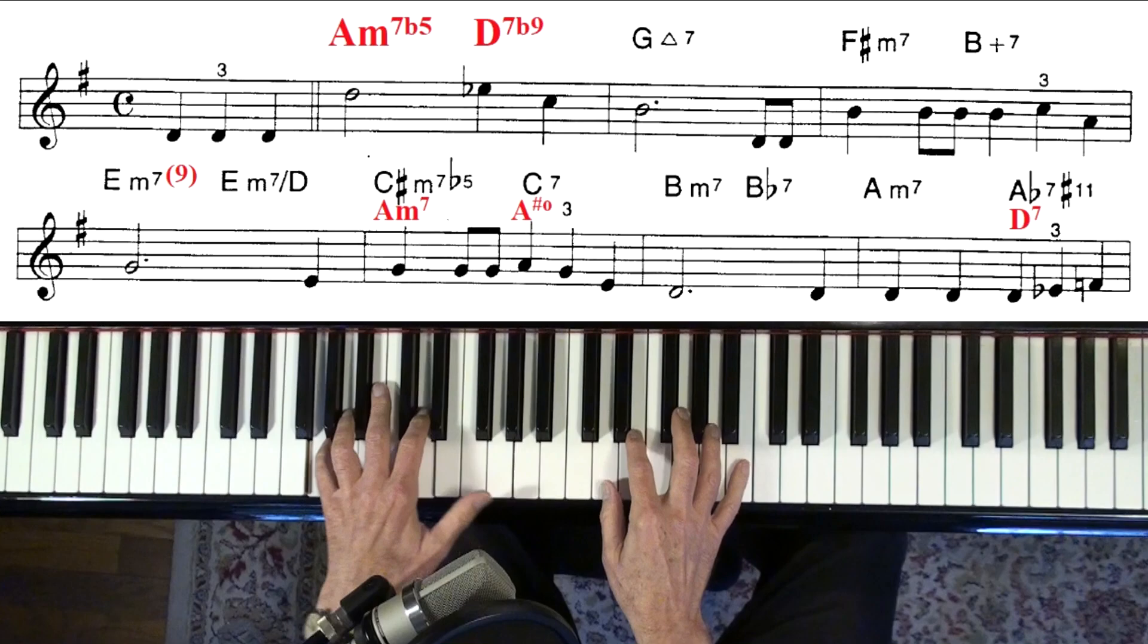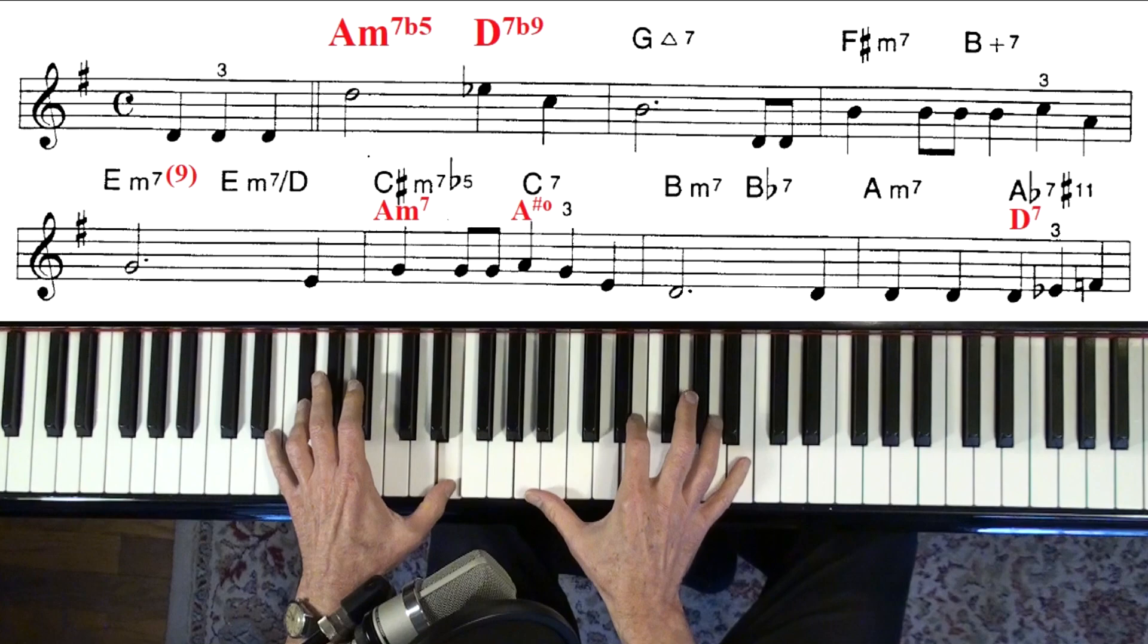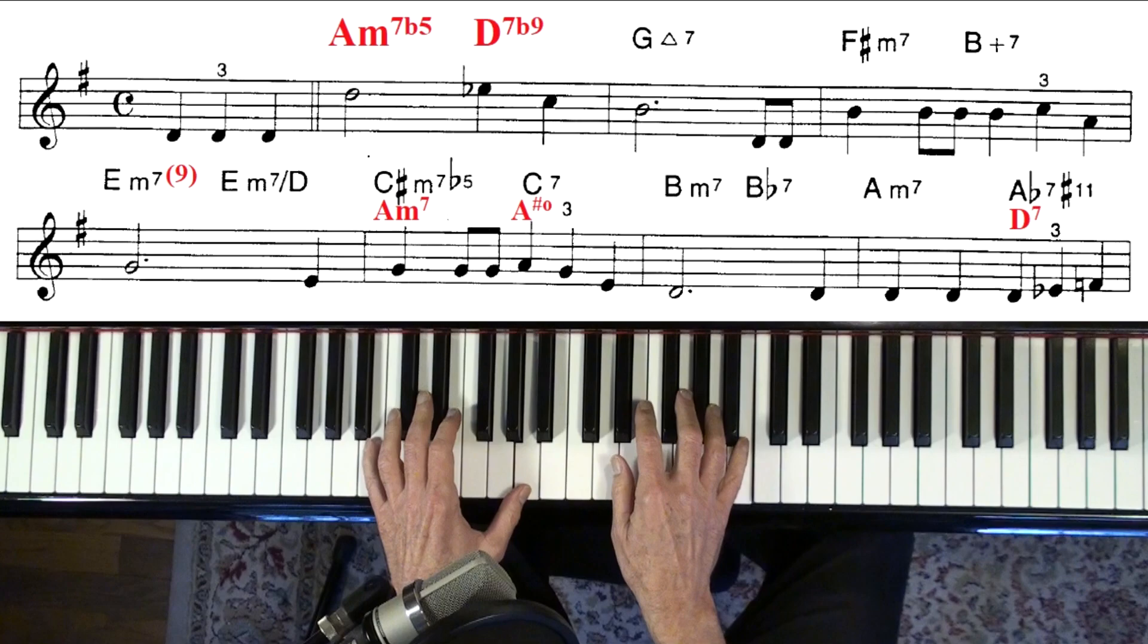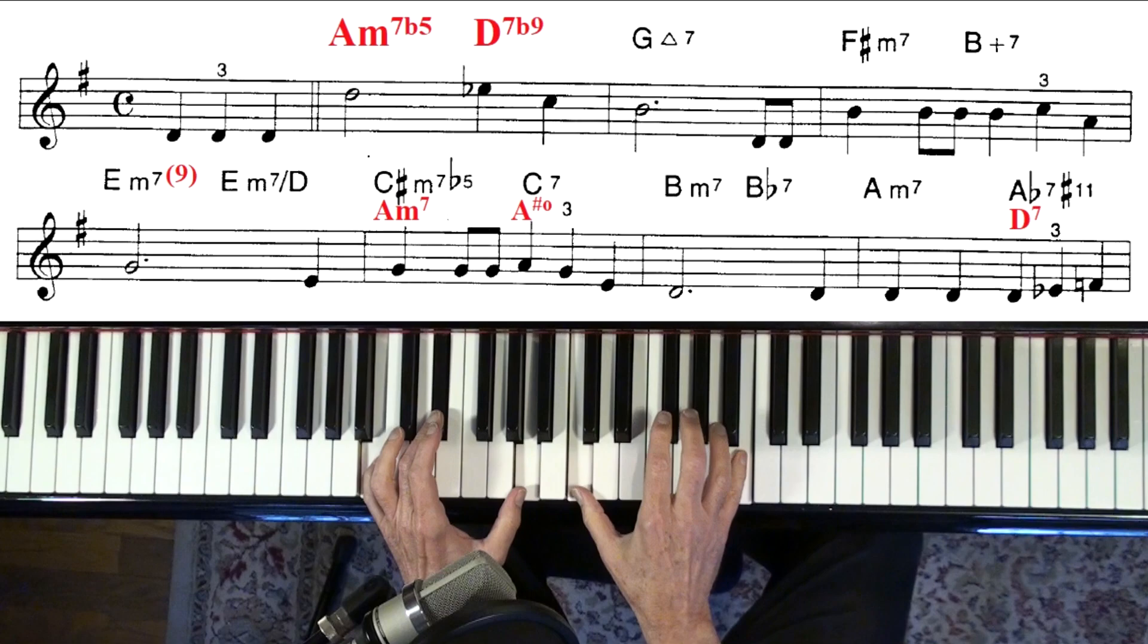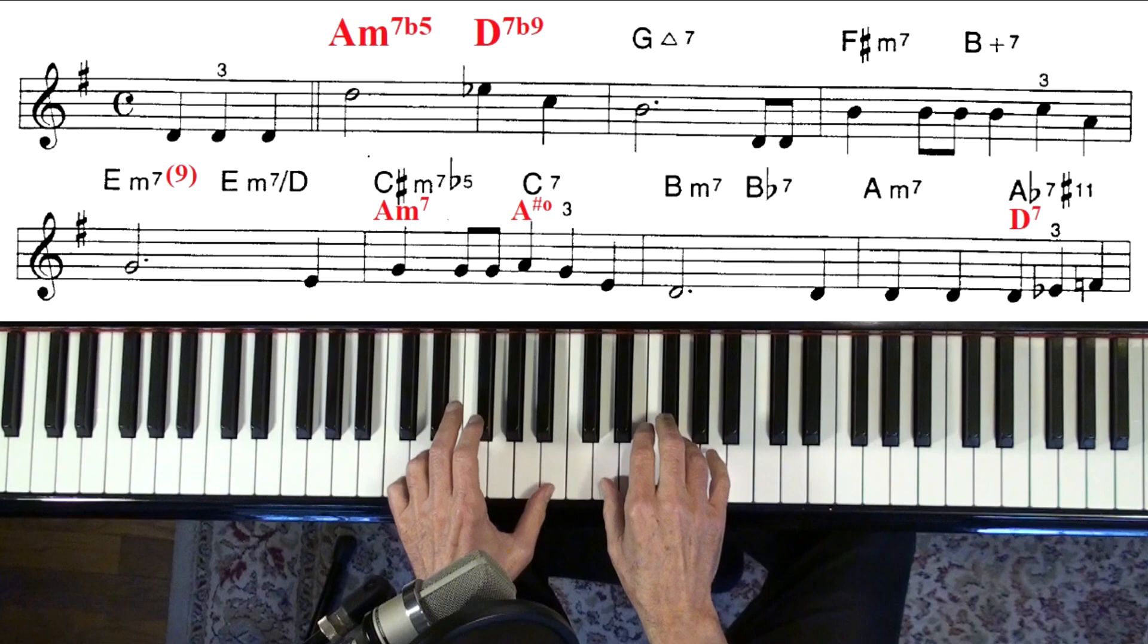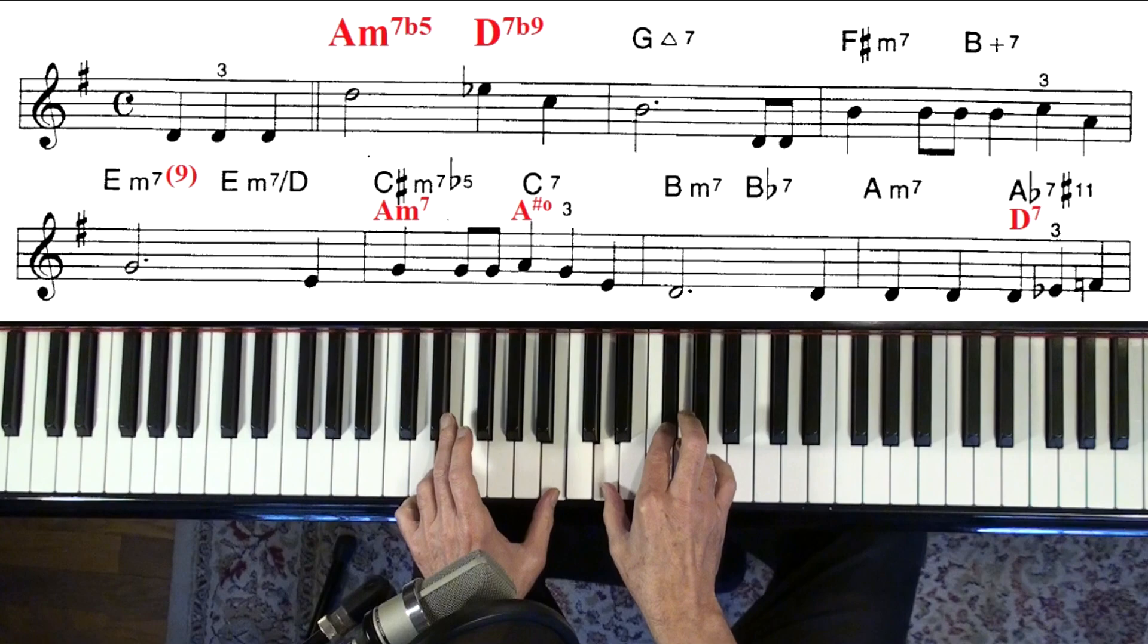F sharp minor seven. Now if you can't reach a ninth comfortably, don't worry about it. Put your thumb down over both of those notes. And B plus seven. That's an altered dominant, so we can put a flat nine in. And the plus is for the sharp five. I usually call it a flat 13. You can put a sharp nine in. Keith Jarrett put the ninth right up there next to the melody. You've got to be careful when you do that, but it worked out pretty well for him.